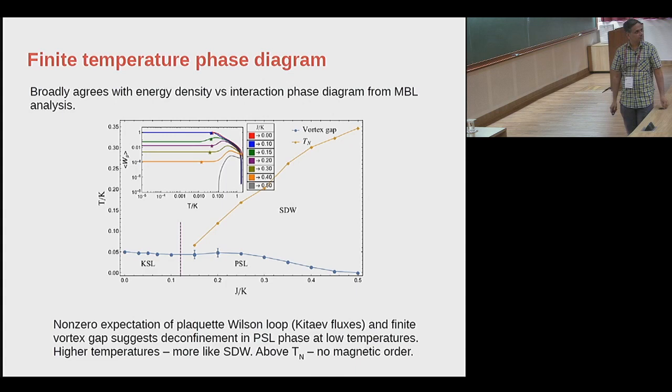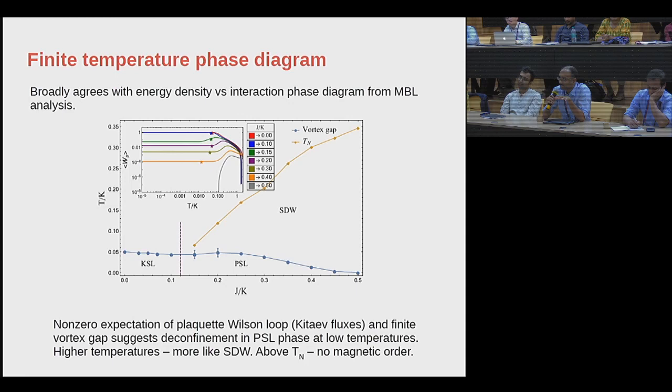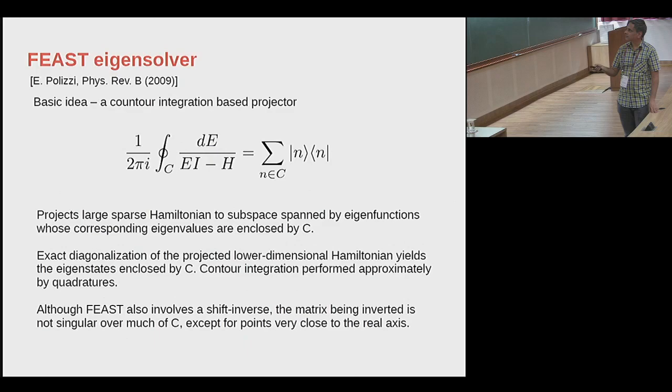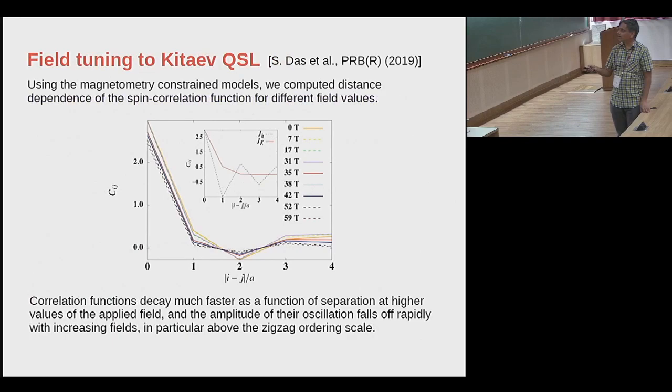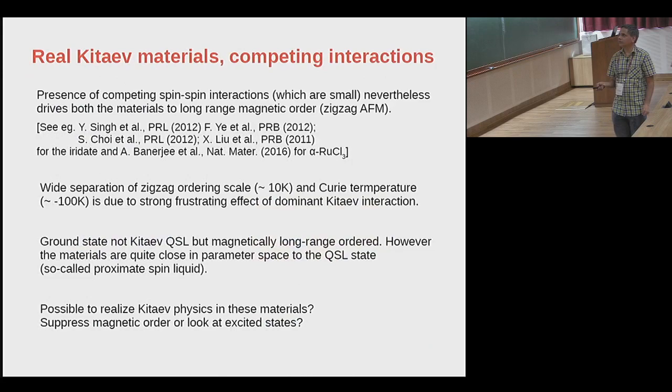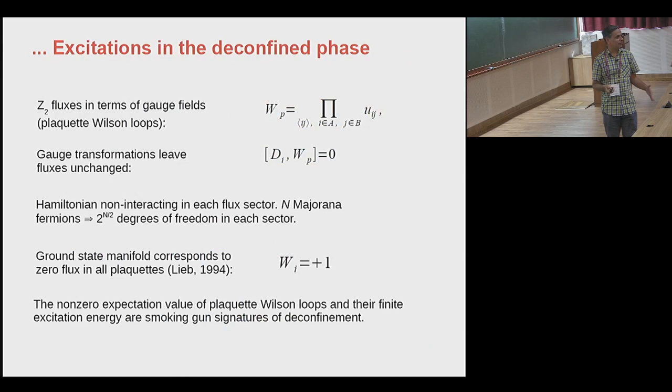This is done in the phase where the pure Kitaev model is a completely gapless spin liquid, right? If you had done this at the phase transition between a gapless and a gapped phase, would you expect anything different, or is it basically the same? You mean to say the toric code limit? Toric code is the other extreme limit, and in between there is a transition. A gapless to gapped... I think so, but I'm not sure.